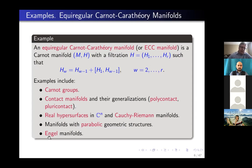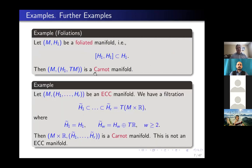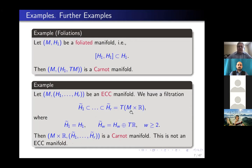Other examples include Engel manifolds, which are step-three examples. Other examples include foliations — for foliations you have sub-bundles where H1 is involutive, and this way you get Carnot manifolds. Another example: start with an ECC manifold and take the product with R, then you can construct a filtration H̃1 through H̃R, where H̃1 is H1 and for W ≥ 2, H̃W is HW plus TR. This gives a filtration of the tangent bundle of M × R, and you get a Carnot manifold, but it's not an ECC manifold. This example appears, for instance, when you look at the heat equation on an ECC manifold.